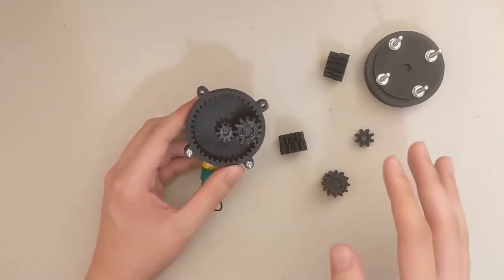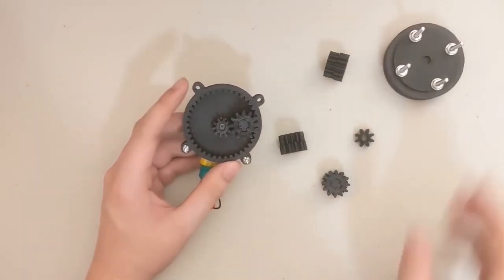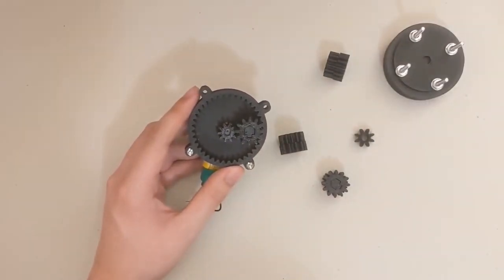In this configuration we're going to get about 268.8 turns of the sun gear to equal one turn of the output. Now if you want to check out the model, there's a link down below in the description as well as an assembly video. Okay, let's get down to testing.